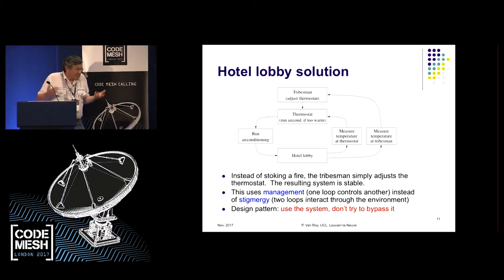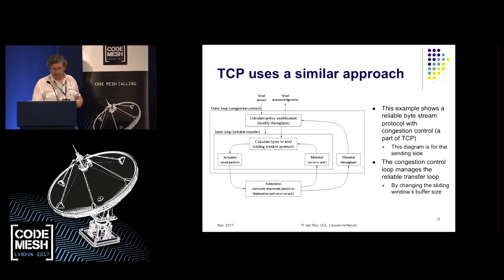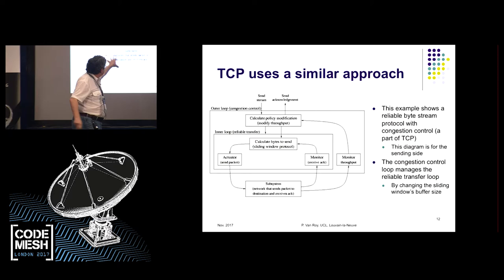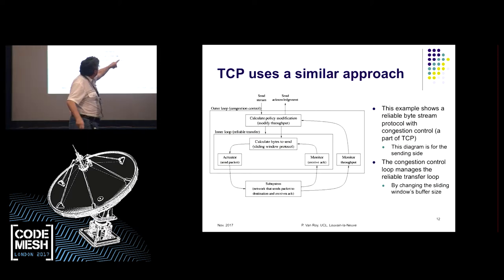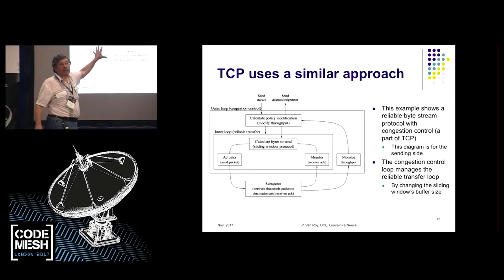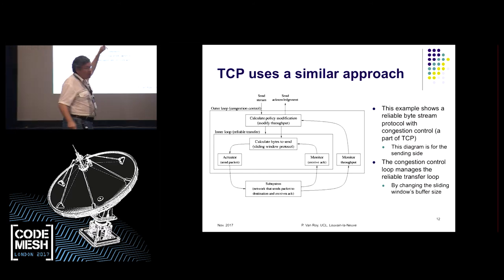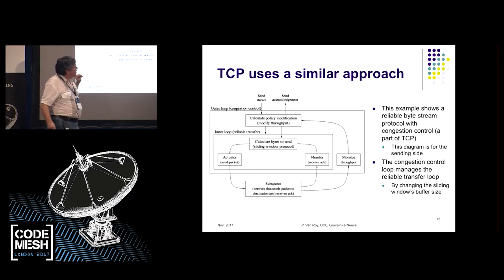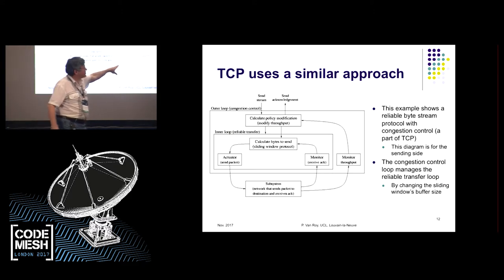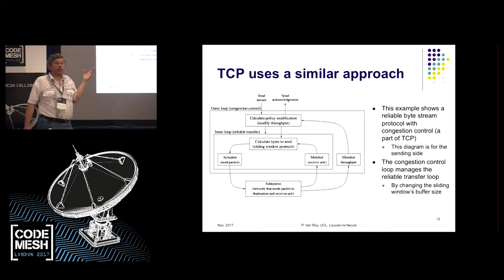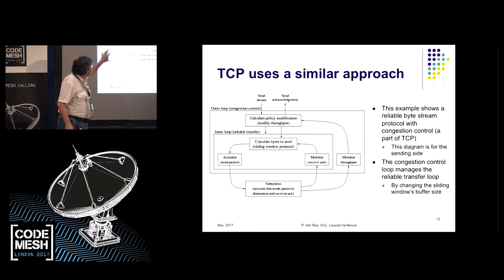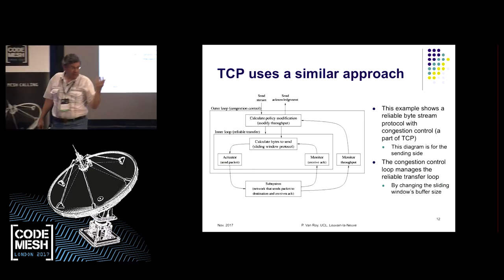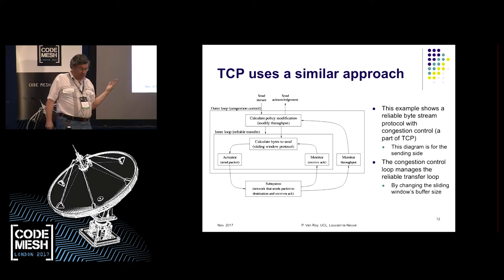This kind of design — thinking in terms of interacting loops — is actually interesting. TCP uses a similar approach. There's an inner loop: the subsystem is the network; packets are sent, acknowledgements come back. The sliding window protocol figures out which packet to send next. This inner loop is controlled by an outer loop, which monitors system throughput and handles congestion by modifying the inner loop — specifically, by changing the size of the sliding window. TCP is actually a similar approach to the hotel lobby.